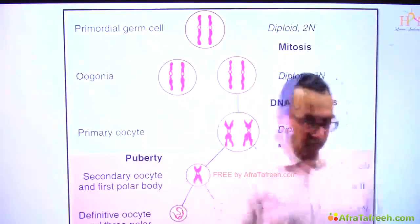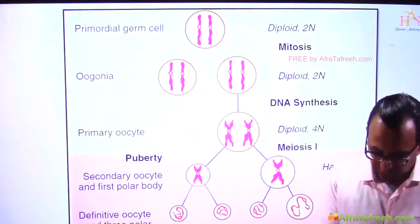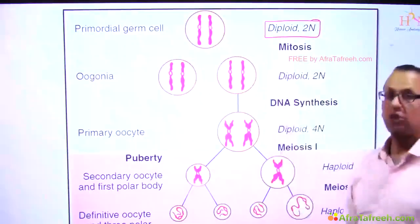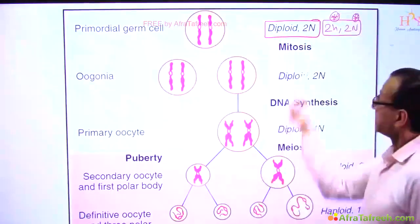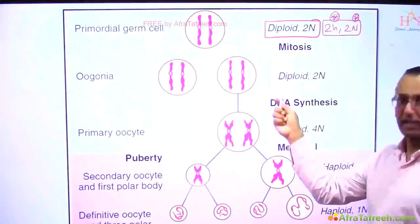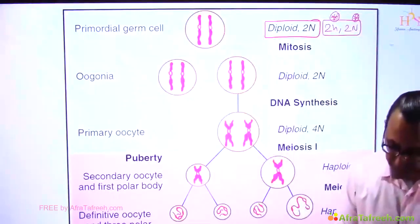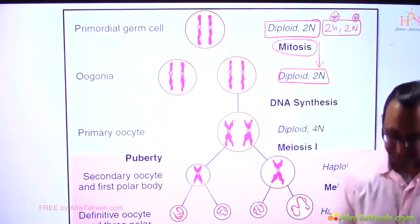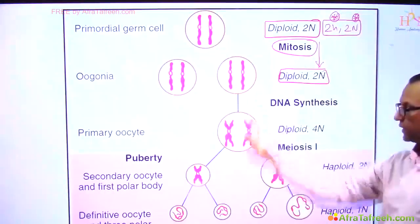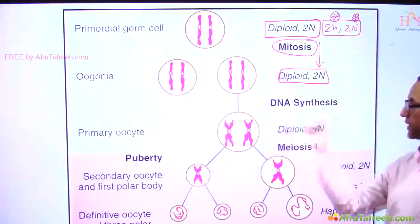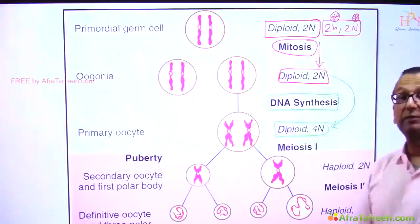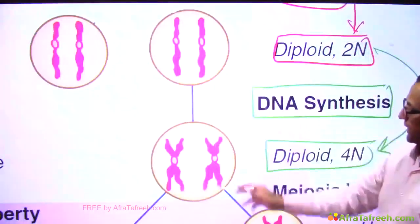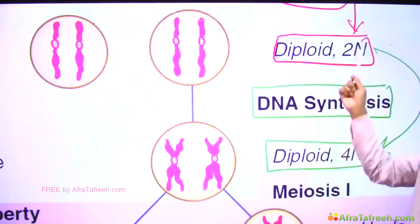Notice that as we have this diploid status here which is 2n and 2N — the small n is the number of chromosomes and the capital N is the amount of DNA. Since it is mitosis, nothing is going to change in oogonium. So oogonium remains the same because the process is mitosis, but then this oogonium wants to enter meiosis and it has to duplicate the DNA. As it is duplicating the DNA it has become 4N. So 2N has become 4N. When there is a duplication of DNA the diploid status is the same but the amount of DNA is double.